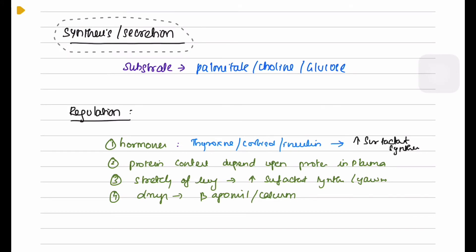Synthesis and secretion: Surfactants are produced from the substrates palmitate, choline, and glucose. Regulation of surfactant synthesis: Hormones like thyroxine, cortisol, and insulin increase surfactant synthesis. Protein content depends upon the proteins in plasma. Stretching of the lung increases surfactant synthesis.